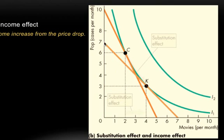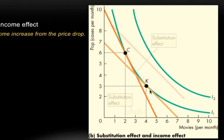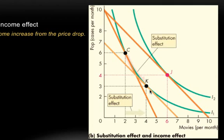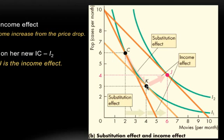Look at this budget constraint — it shifts to give her that increase in income. It's a parallel shift. We give back the income that we had taken away earlier, such that she is now on the new indifference curve. When you give back the income that you took from her, she moves from point K to point J.